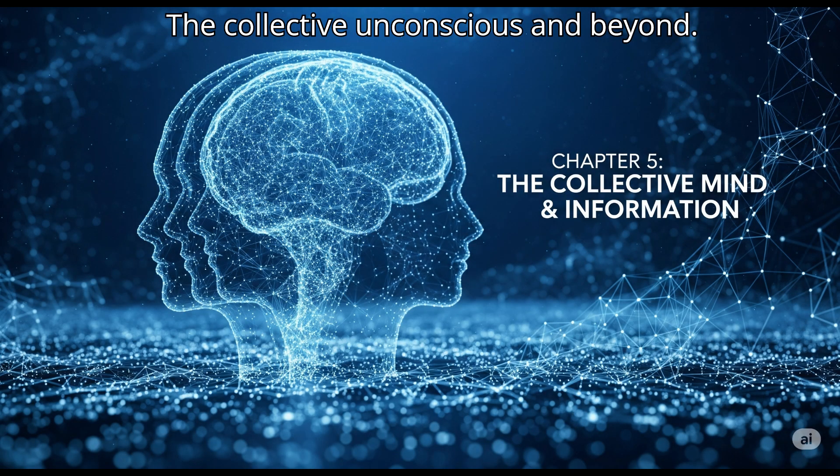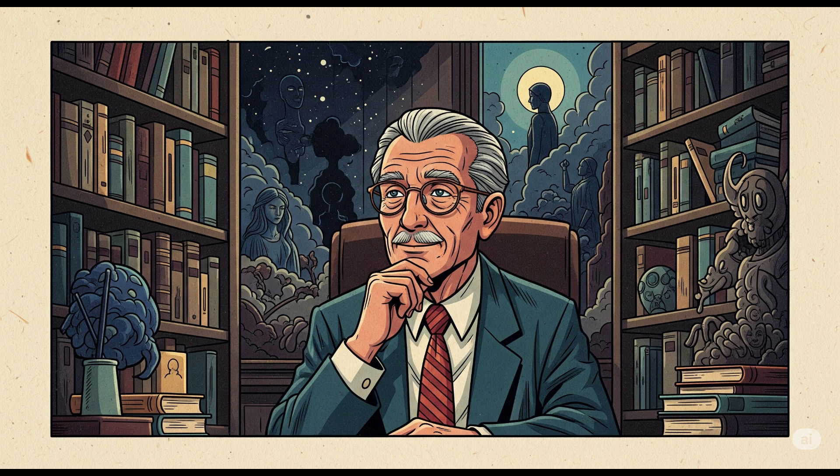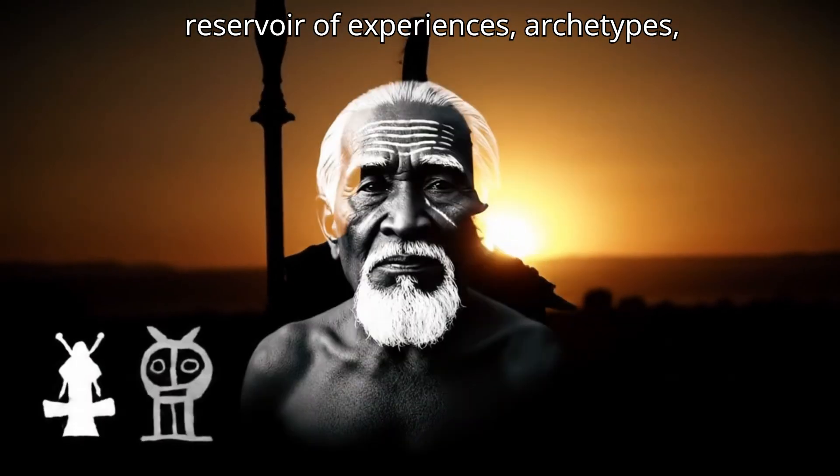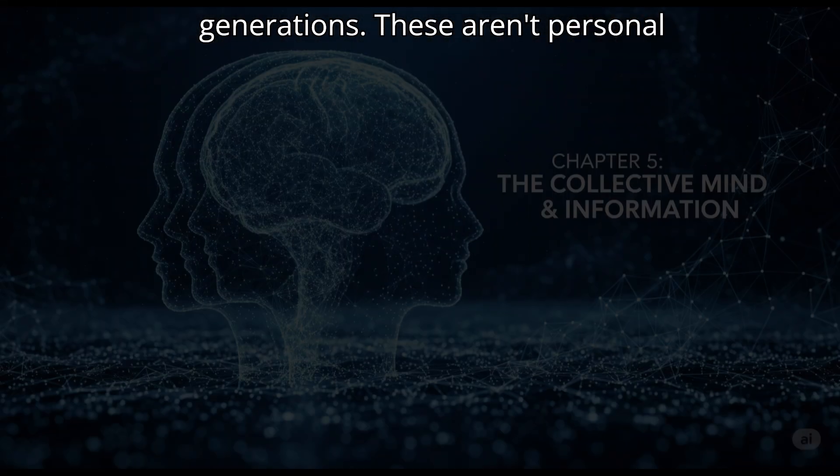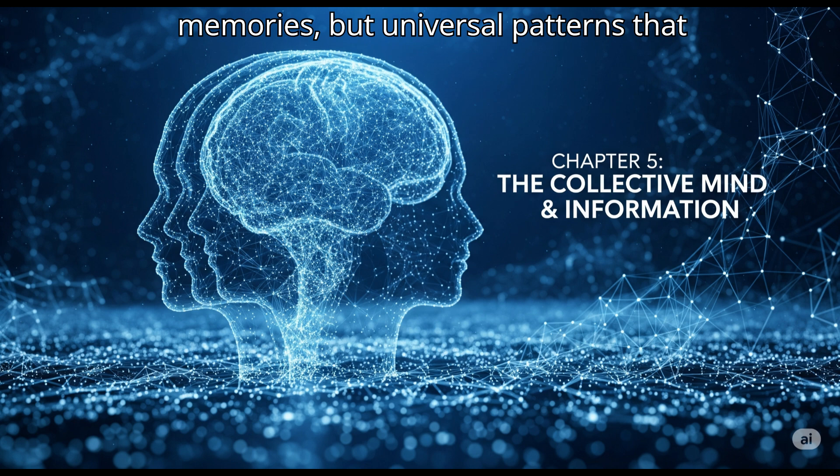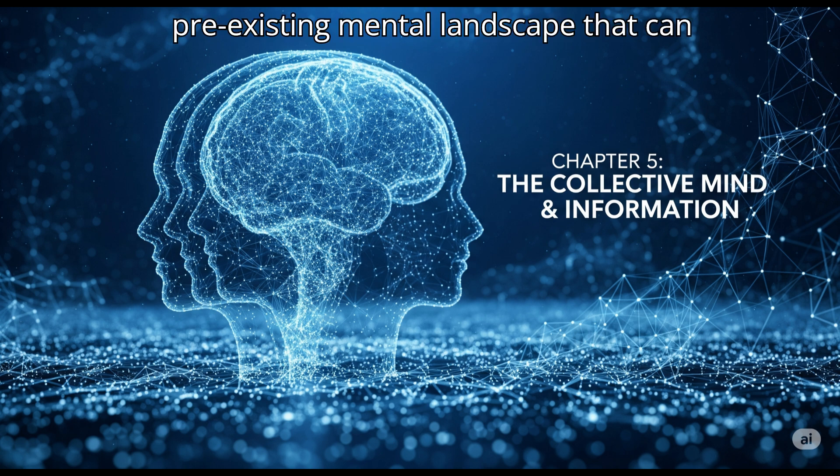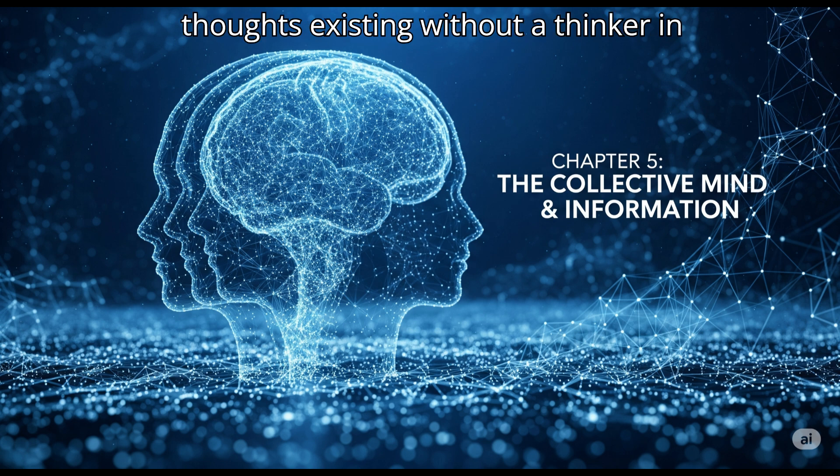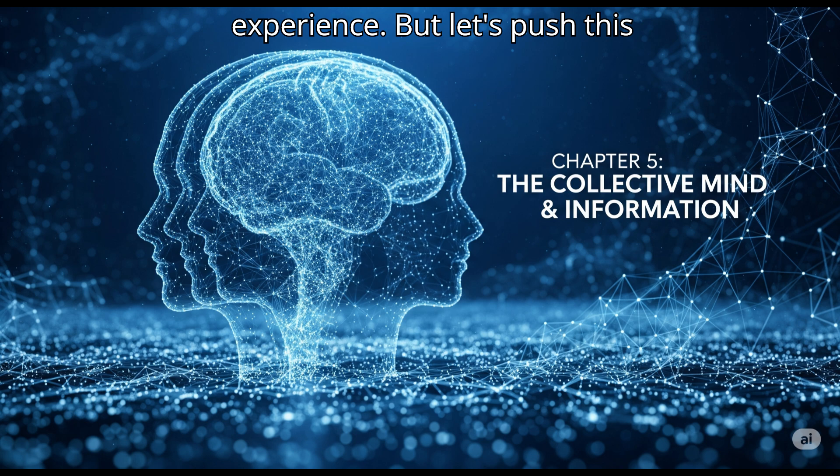The Collective Unconscious and Beyond. Carl Jung, the renowned psychologist, proposed the concept of the collective unconscious. He believed that humans share a common reservoir of experiences, archetypes, and inherited ideas, passed down through generations. These aren't personal memories, but universal patterns that influence our thoughts and behaviors. While Jung's theories are more psychological than purely neurological, they suggest a form of shared, pre-existing mental landscape that can shape individual thoughts.